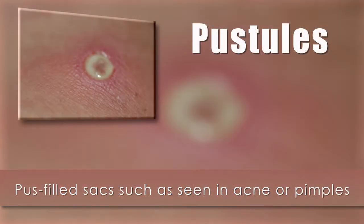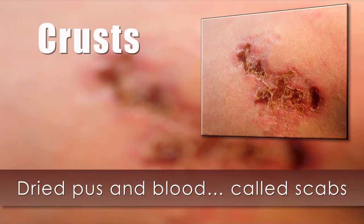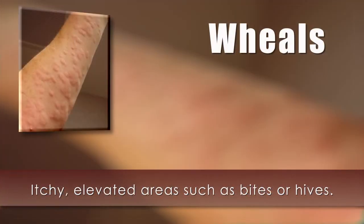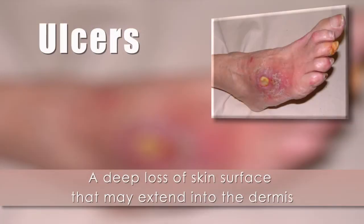Pustules are pus-filled sacs such as seen in acne or pimples. Crusts are areas of dried pus in blood, also known as scabs. Wheals are itchy, elevated areas; examples of these are insect bites and hives. Ulcers are a deep loss of skin surface that may extend into the dermis and may cause periodic bleeding and the formation of scars.